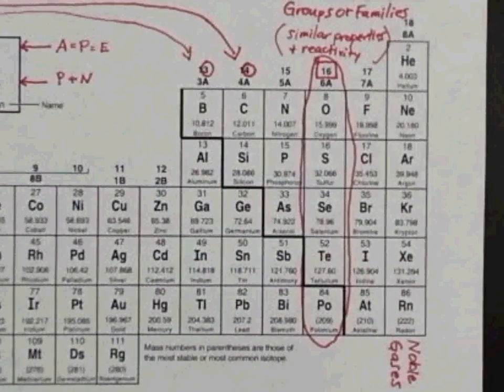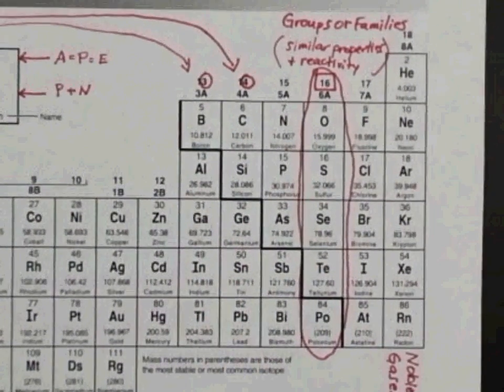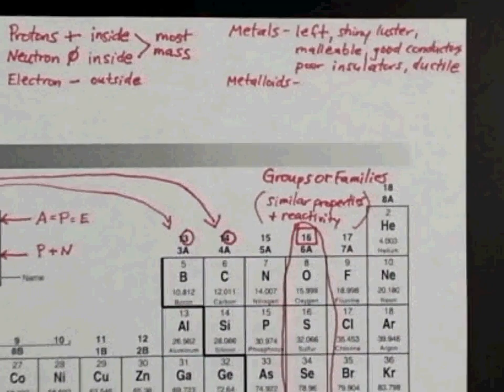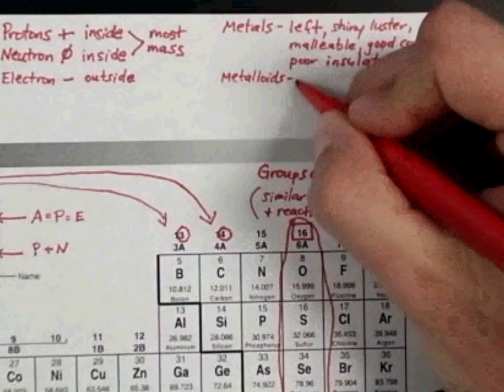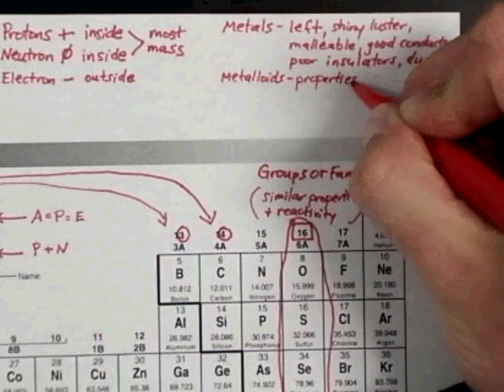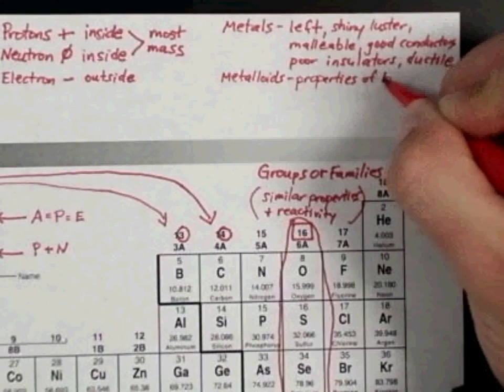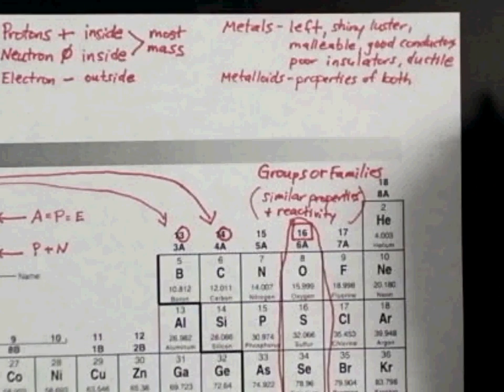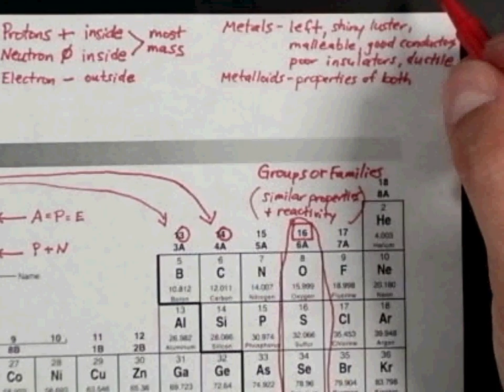When you think of aluminum, it does look like it has lots of properties of metal. So you want to make sure that you know that that is actually a metal, just in case that pops up. All right. So metalloids have, they have properties of both. I'm not going to list all the properties here. You just need to know they have properties of both. They could be shiny and they could be brittle.